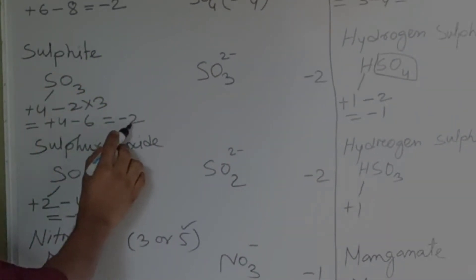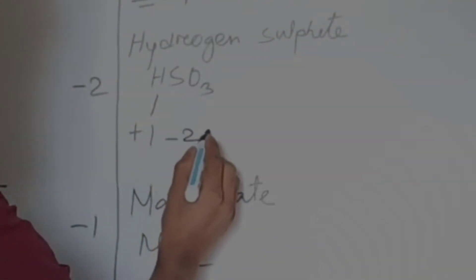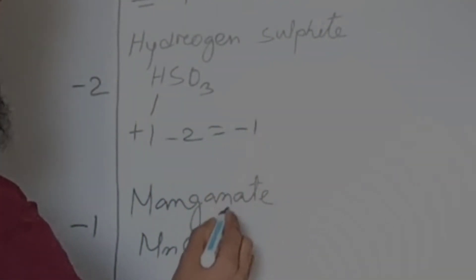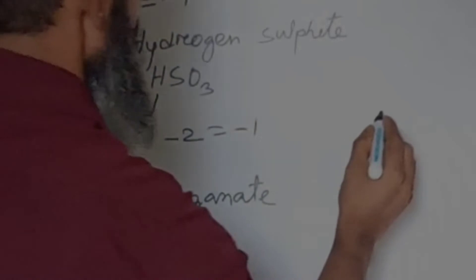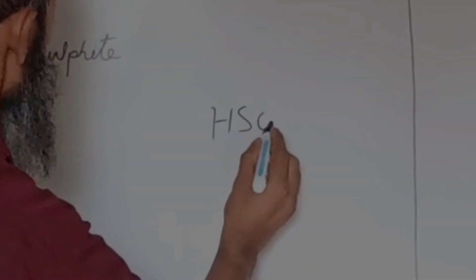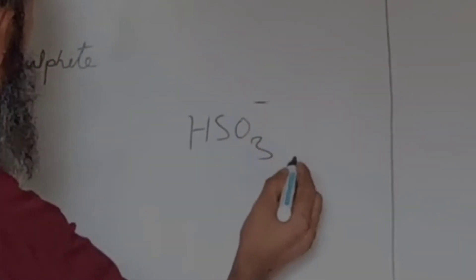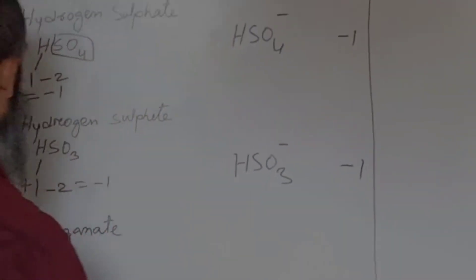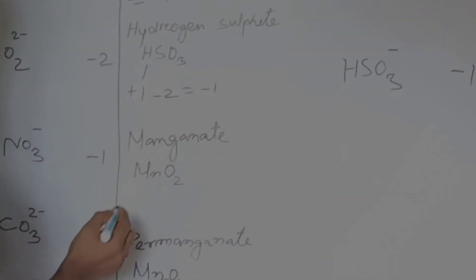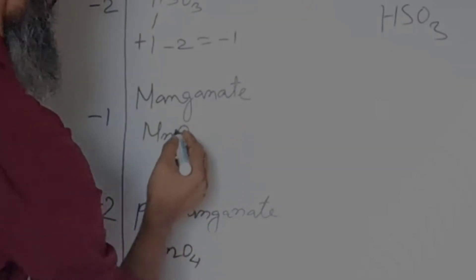Now hydrogen sulfite — hydrogen is electropositive with valency 1. We have already found the valency of sulfite as minus 2. So plus 1 minus 2 gives valency minus 1. Its symbol is HSO3 1-minus.